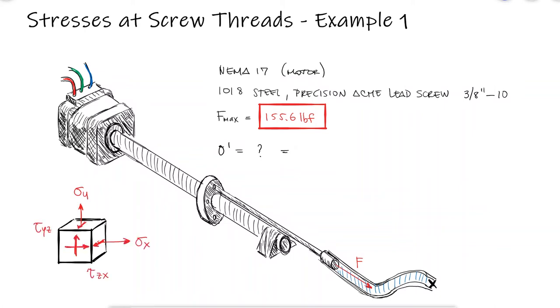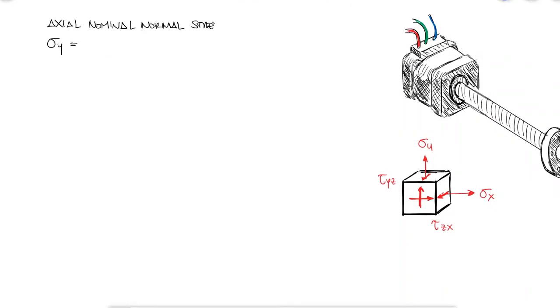From that main video, we know that sigma y will be the axial stress which affects the body of the screw, and we therefore use the root diameter.